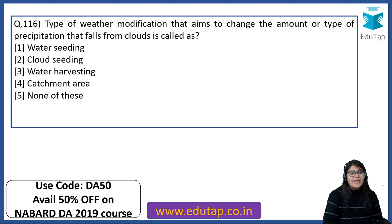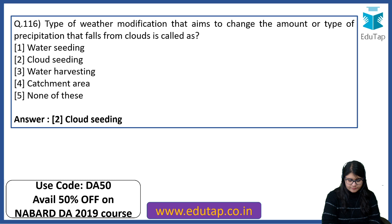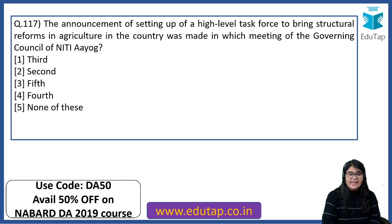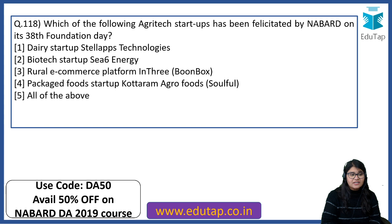The type of weather modification that aims to change the amount or type of precipitation that falls from clouds is called cloud seeding. The announcement of setting up a high-level task force to bring structural reforms in agriculture was made at which meeting of the NITI Aayog governing council? The right answer is the fifth meeting. Which agritech startups were facilitated by NABARD on its 38th foundation day? The answer is all of the above.